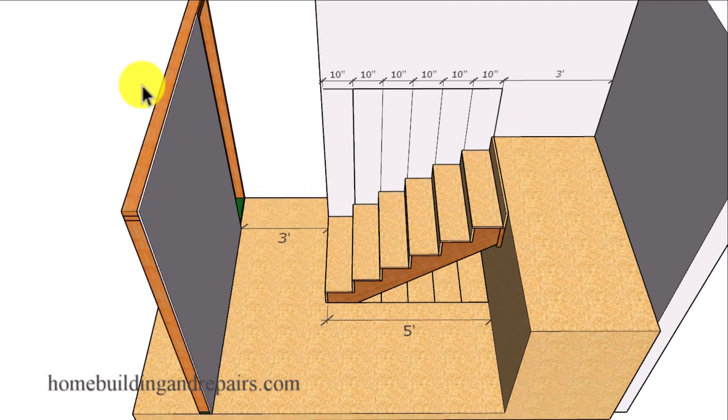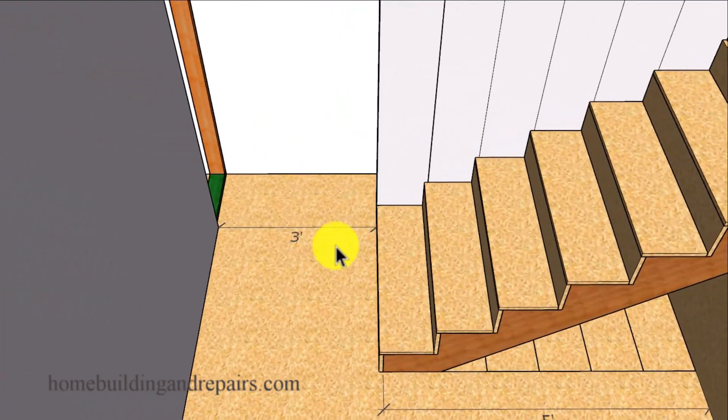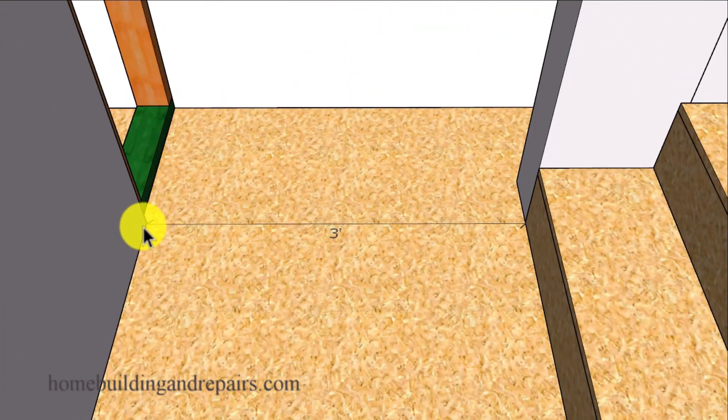And of course that would look something like this where we would have three feet in between the front of the face of the drywall and the front of the face of the riser.